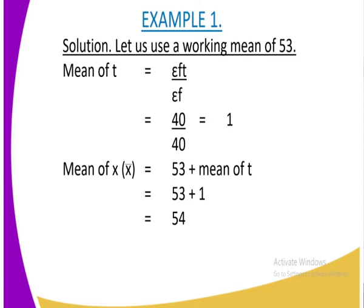And now to get the overall mean, we are going to get our assumed mean whereby we said that we assume that our working mean is 53. Then we are going to add the mean of t, which is negative 1. So actually, our overall mean, you are going to get 53 plus negative 1, which is 52.